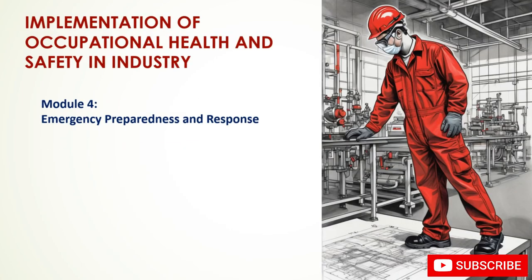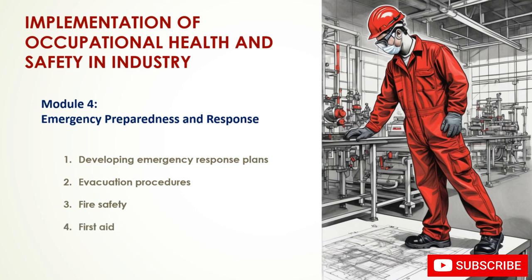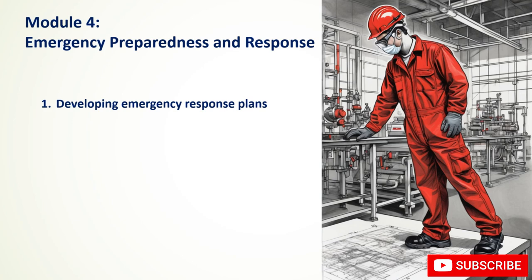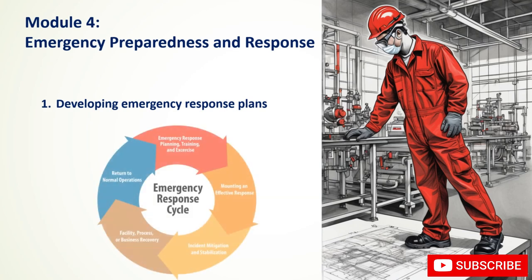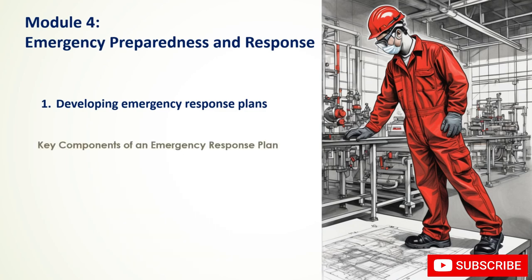Module 4: Emergency Preparedness and Response. An emergency response plan outlines procedures for handling various emergencies in the workplace, ensuring a coordinated and effective response that minimizes harm. Key components include hazard identification — identifying potential emergencies such as fires, chemical spills, natural disasters, or active shooter situations, and assessing the likelihood and potential impact of each.